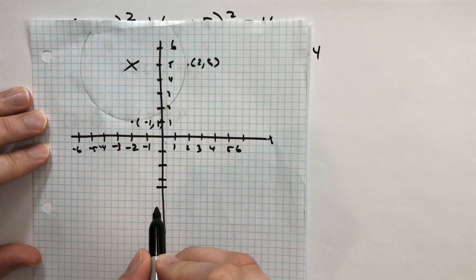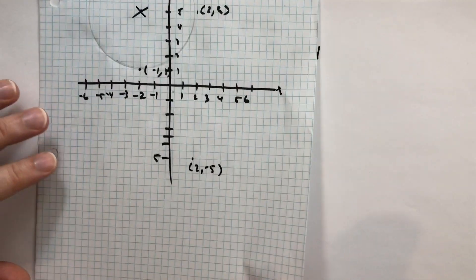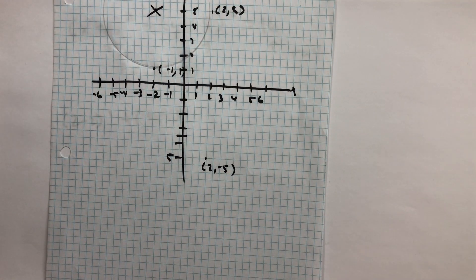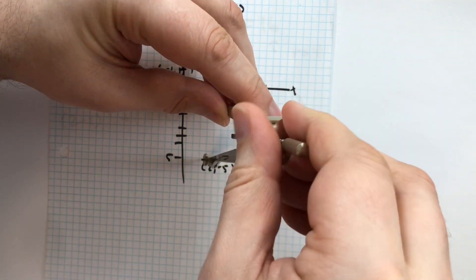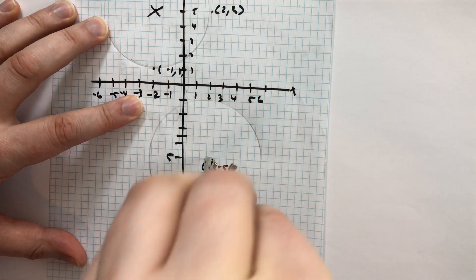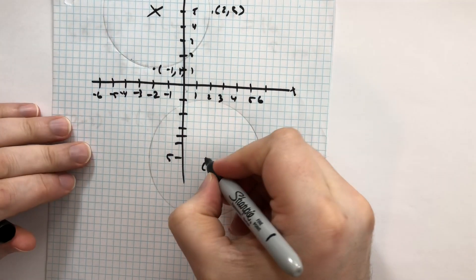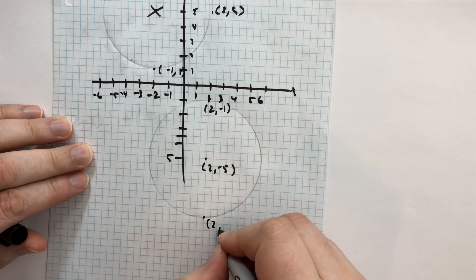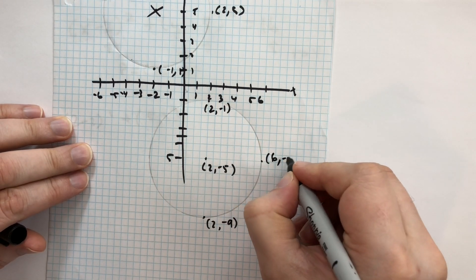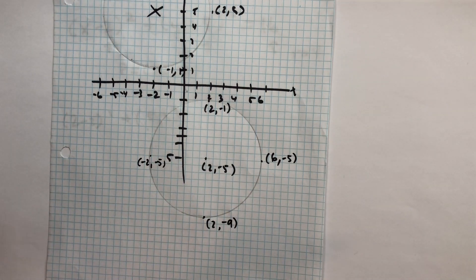So two comma minus five — let's draw a circle centered on that point and find solutions. There we go — there is the circle. So we expect this point up here to be (2, minus 1), this point down here to be (2, minus 9), this point over here to be (6, minus 5), and this point to be (minus 2, minus 5) — just adding four in each direction. These should all be solutions to this equation.